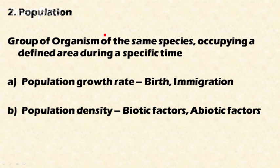The next level of organization is population. A population is a group of organisms of the same species occupying a defined area during a specific time. For example, a group of lions belonging to the same species occupying a particular area such as Gir forest in Gujarat for a specific time is called a population.